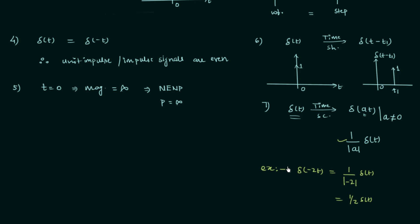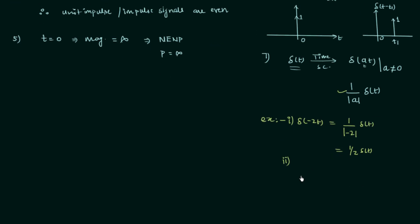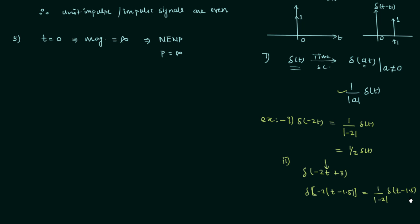Let's take a more complex example. The signal is delta(minus 2t plus 3). Before applying the time scaling result, we separate the minus 2: inside the bracket we write minus 2 times (t minus 1.5). Now applying the result, we get 1 over mod(minus 2) times delta(t minus 1.5), which equals 1 by 2 times delta(t minus 1.5). This is the answer to the second problem.